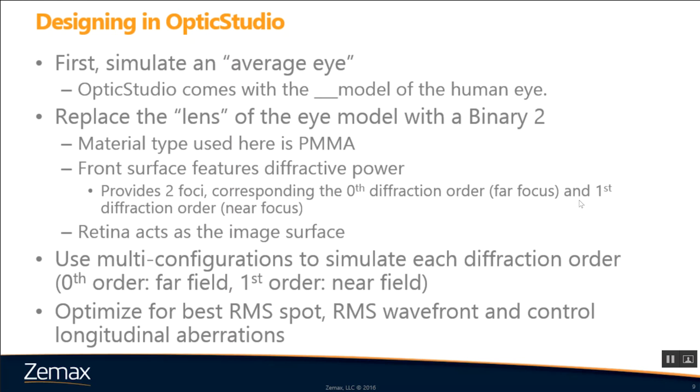So, kind of just breaking down what we're going to be doing in OpticStudio here in a bit, we're going to first simulate an average eye. Now, OpticStudio comes with a sample eye model that we'll show here in a bit. Now, once we get that up, we will replace the lens of that eye model with a binary 2. We'll use PMMA as our material type, which is a common material that's used for a lot of IOLs. And we're going to say that our front surface is going to feature our diffractive power. And it's going to provide two foci corresponding to the zero diffraction order, that's going to be our far focus, and the first diffraction order, that's going to be our near focus. And our retina is obviously going to act as our image surface.